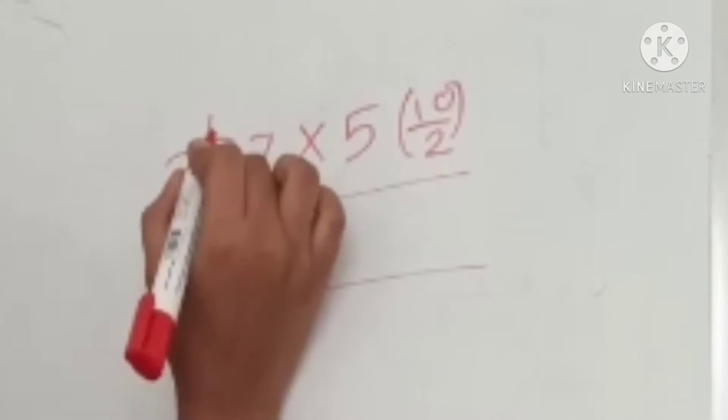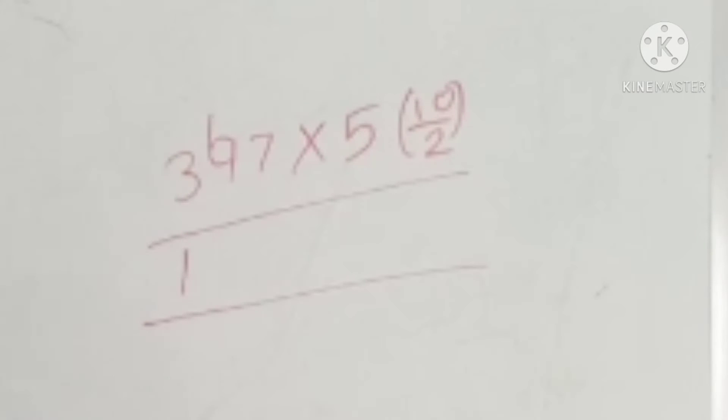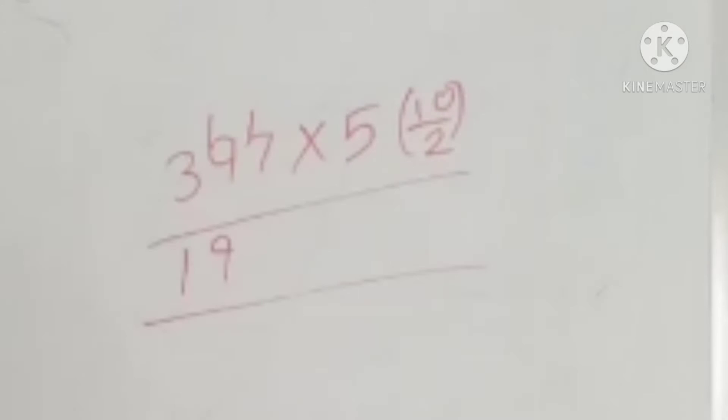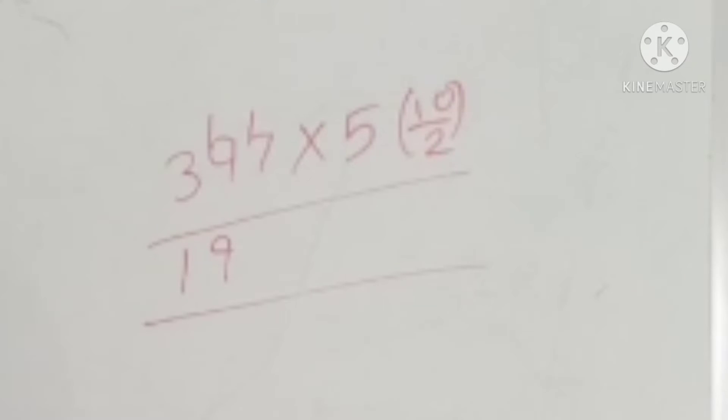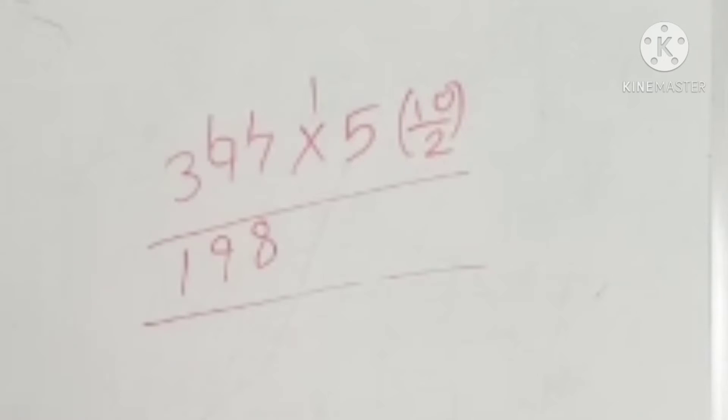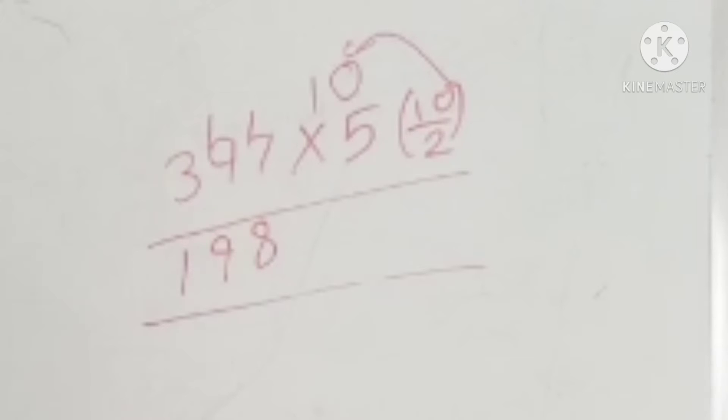After that, when you see this, you'll make it 19. So 19 doesn't come in 2's table, so the nearest is 18. So 9 twos are 18, so you'll again give 1. Then 17 doesn't come in 2's table, so it's 16. 8 twos are 16 and remaining 1. Now this 1 is remaining, so you'll just give the 0 of the 10 to it, like this.